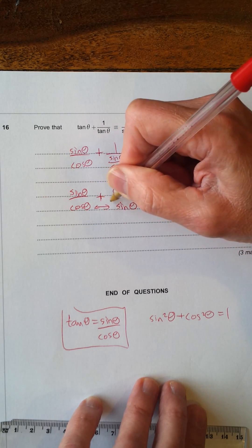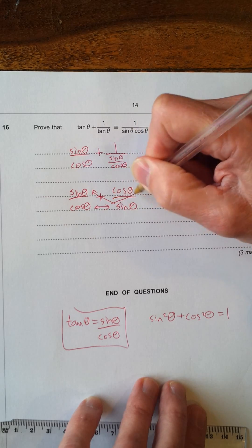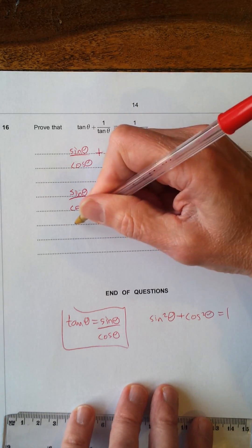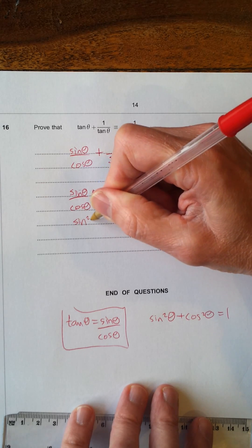So, we get, on the top, sin θ times sin θ, which is sin²θ, plus cos θ times cos θ is cos²θ.